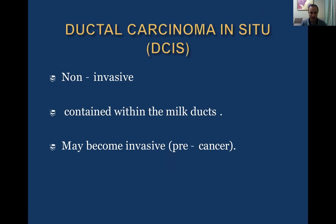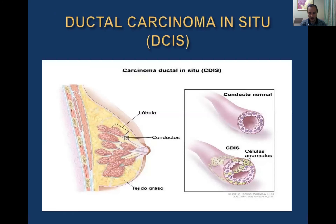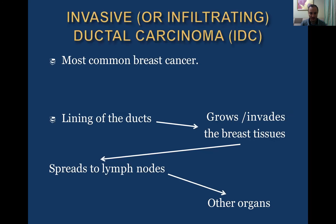Ductal carcinoma in situ — DCIS — is non-invasive. It starts from the epithelium of milk ducts and may become invasive later. From the beginning, it doesn't spread through the basement membrane of the ducts — it stays always in the ducts. This is the ductal carcinoma in situ T0 form. Invasive ductal carcinoma is the most common breast cancer. It starts from the ducts, grows, and may give metastasis to lymph nodes or distant metastasis.